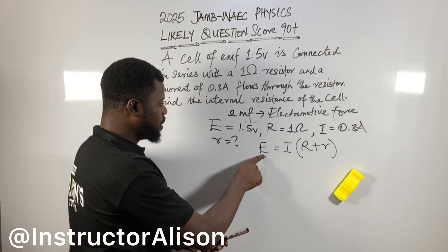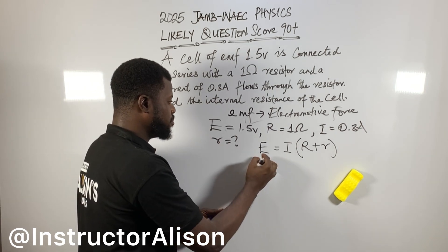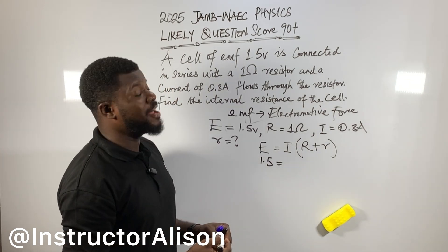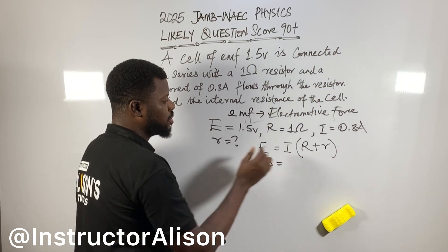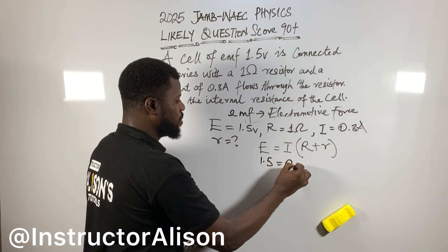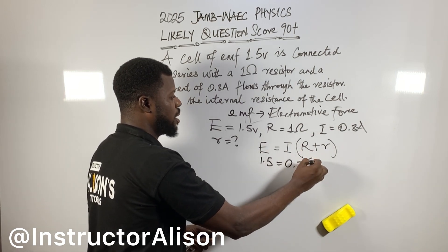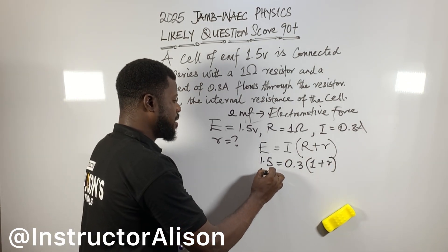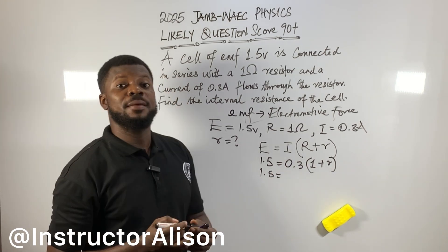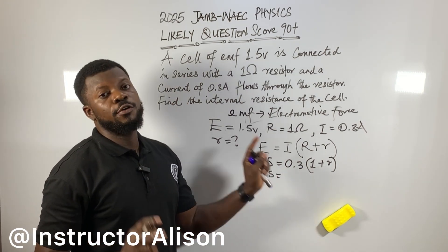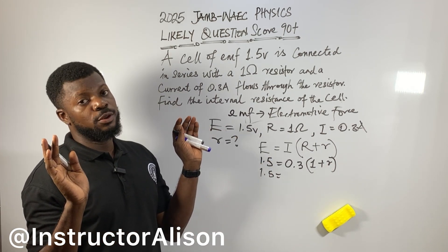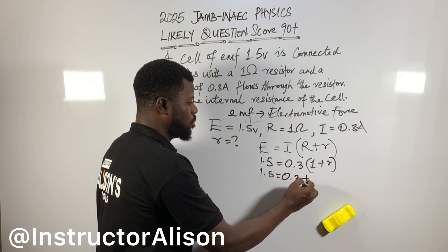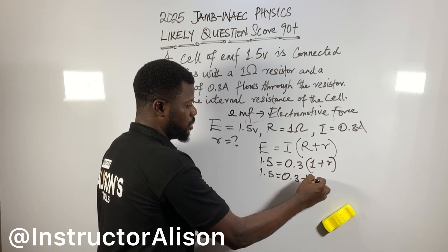This formula — now connect everything. E, where E is the EMF, the value is 1.5. Make r the subject of formula because it is defined — it will be simple. Current is now 0.3. Capital letter R — the resistor — is 1. So 1.5 equals 0.3 times open bracket 1 plus r. Expanding: 0.3 times 1 gives 0.3, plus 0.3r.